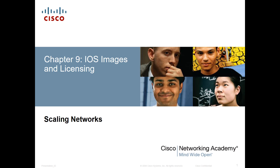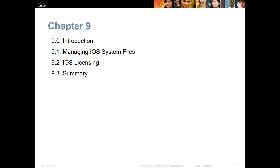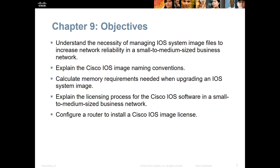Welcome to my Cisco Scaling Networks last chapter review. This is chapter 9, IOS Imaging and Licensing. This is the last chapter for this curriculum. We're going to talk about managing IOS system files and licensing — understanding licensing, the naming convention, how it works, how to upgrade, how to manage them, and how to install them.